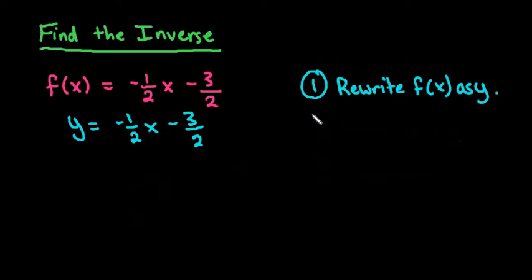Step two is to switch the location of x and y. So we want to actually switch where x and y are. Because remember an inverse function switches the coordinates of x and y. So we're going to actually physically switch x and y.